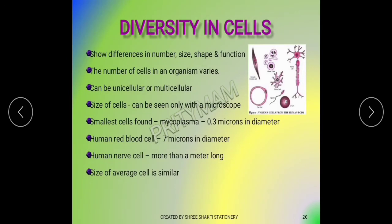Cells show considerable diversity — they show differences in number, size, shape, and function. Even within an organism, cells show variations based on their functions. The number of cells in an organism varies — an organism can be unicellular or multicellular. Some algae may have a few hundred cells, while humans have trillions of cells.